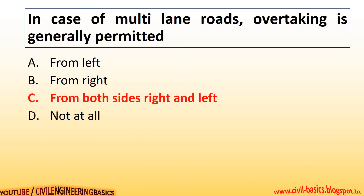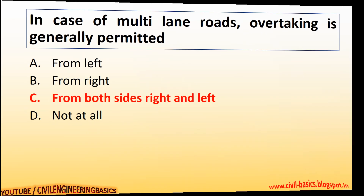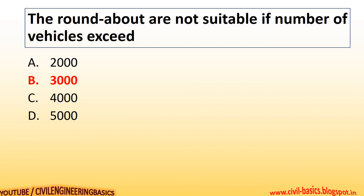In the case of multi-lane roads, overtaking is generally permitted from both sides — right and left. Roundabouts are not suitable if the number of vehicles exceeds 3000.